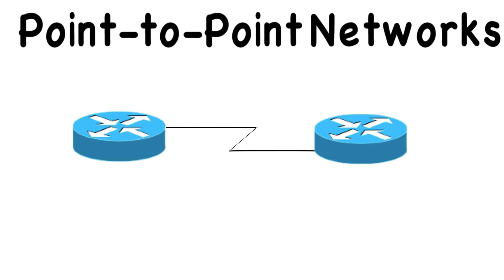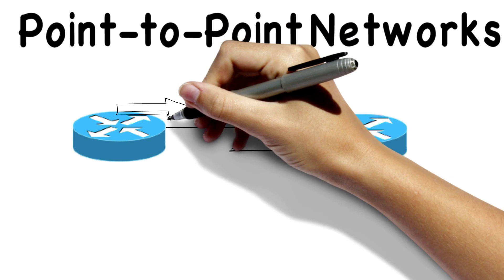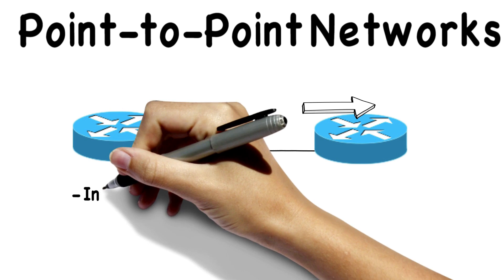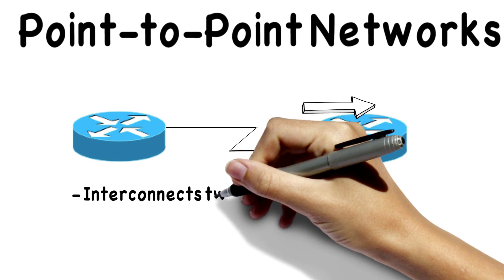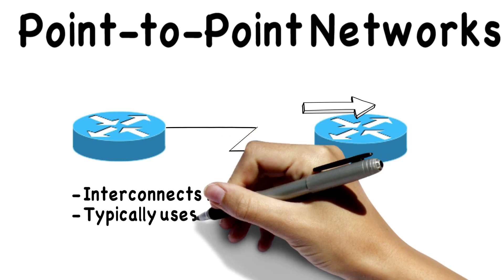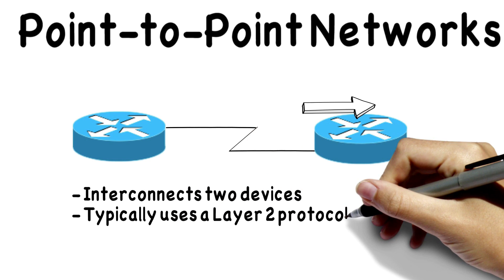We've got a router at each site and we've got a direct connection between those two different sites. If I send traffic from one of the sites, it goes over this point-to-point connection and ends up at the other site. We might have some sort of a leased line connecting one site to the other, and if we have something like a T1 connection, maybe we're running PPP — the point-to-point protocol — over this connection. That's our Layer 2 protocol.